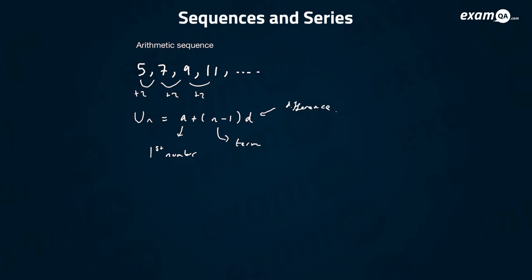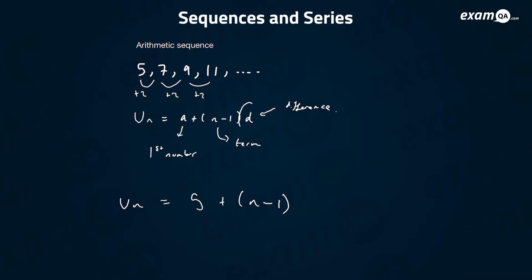So let's see what these mean. The nth term for this sequence above would be equal to five — the first number is five — so: five plus (n minus one) times the common difference, which we found out was two. And this is our nth term.